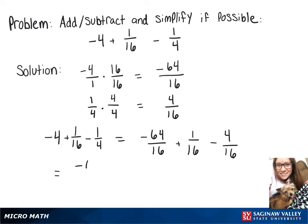Now we can combine all those into one fraction, so we have negative 64 plus 1 minus 4 over 16. And then that simplifies to negative 67 over 16.